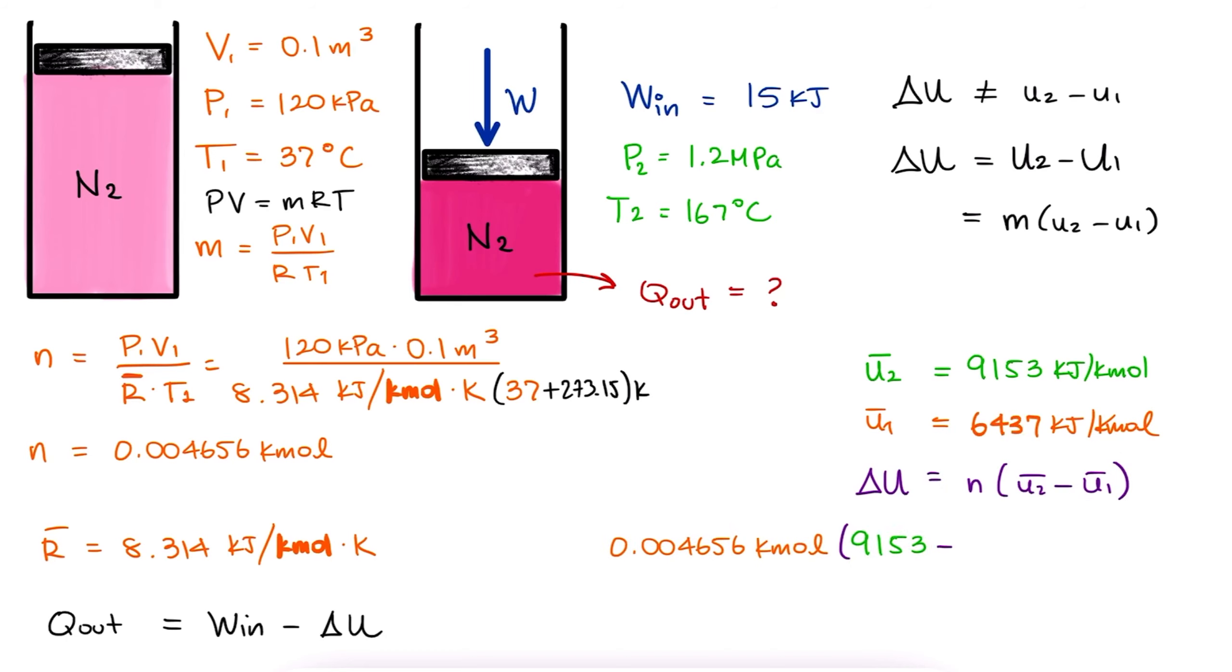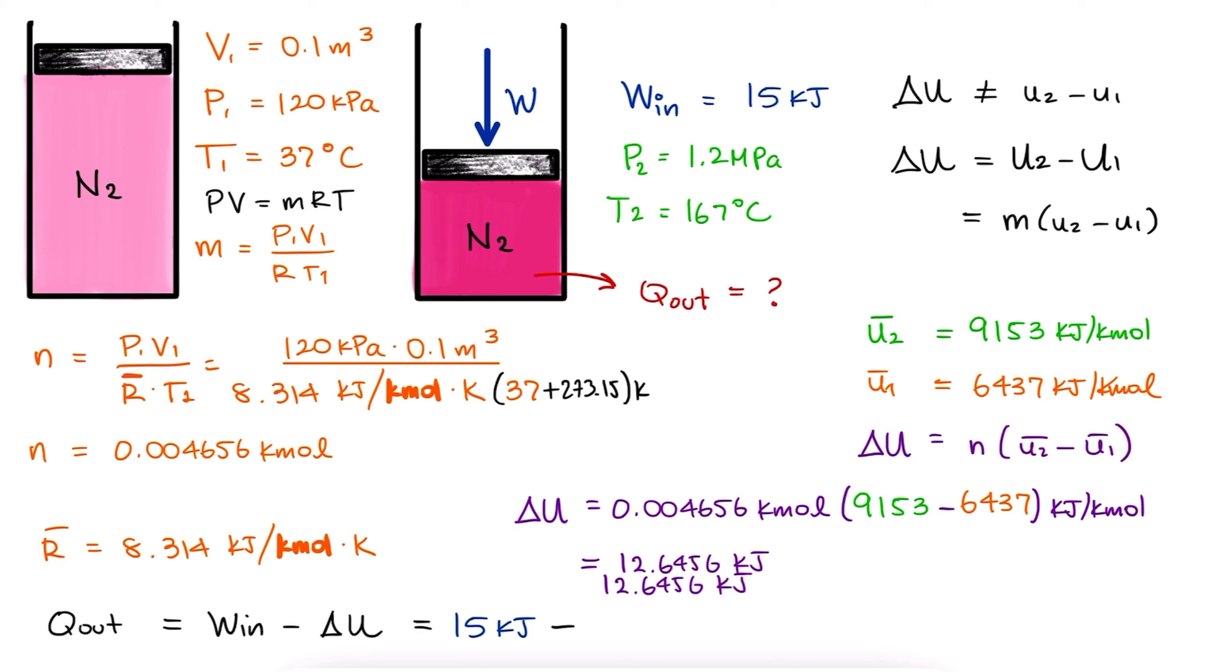With N and the two U-bar values, we find the total change in internal energy, delta capital U, and with the work information we were given, we solve for the heat transfer value.